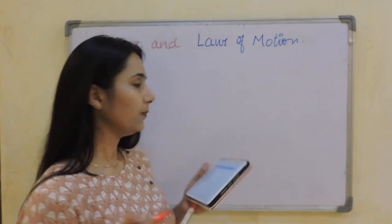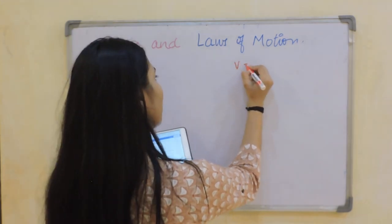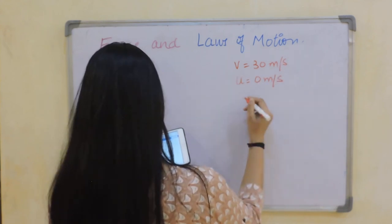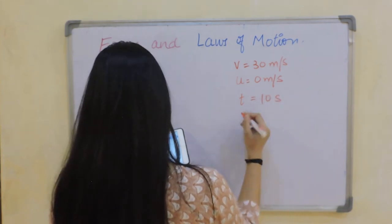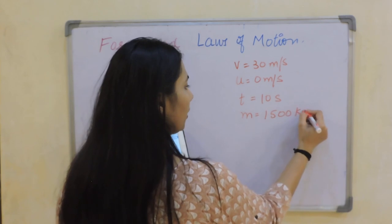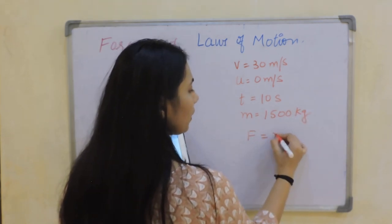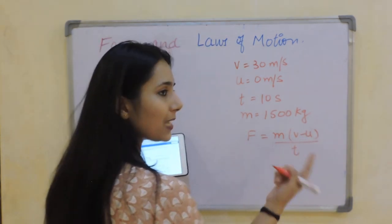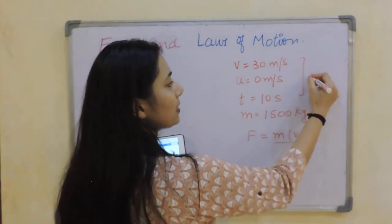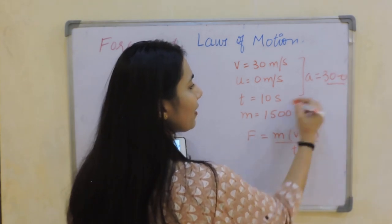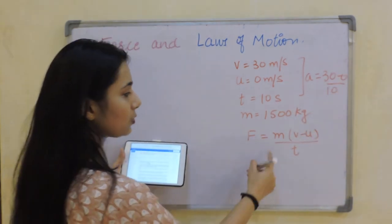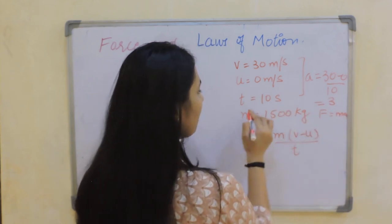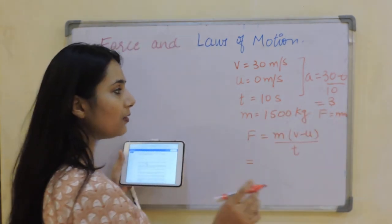Since it says the velocity is 30 m/s, the initial velocity is obviously 0 m/s, time is 10 seconds, and mass is 1500 kg. Using F equals m(v minus u)/t, or equivalently F equals ma with a equals (v minus u)/t: a equals (30 minus 0) divided by 10, giving acceleration of 3 m/s². Then F equals 1500 times 3, giving 4500 Newton.